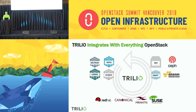Trilio really integrates with everything that is OpenStack, meaning we leverage all the native OpenStack API services — Neutron, Nova, Cinder, Glance. We are compatible with all the different distributions. And from a target repository perspective, these are the different types of protocols that we support.